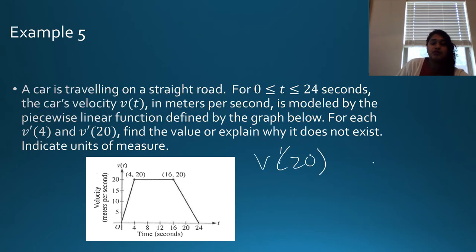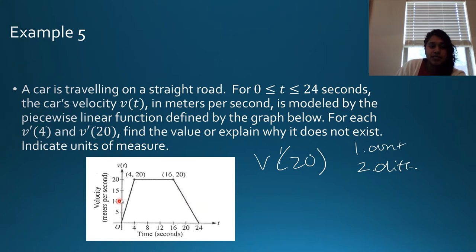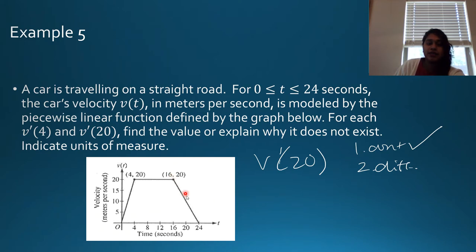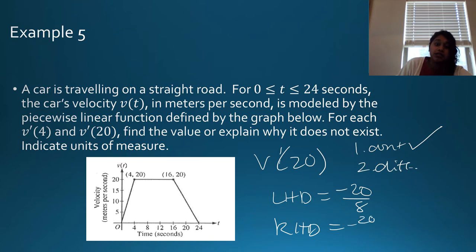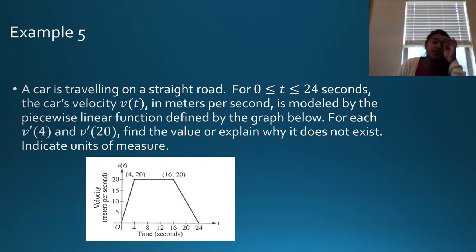Now V′(20): is it continuous and differentiable? The limit from the left is 10, limit from the right is 10, function value is 10 — it's continuous. For differentiability, the left-hand derivative is the slope of the left linear piece: down 20 over 8 = −20/8. The right-hand derivative is also −20/8. Since they're equal, V′(20) exists and it is differentiable.